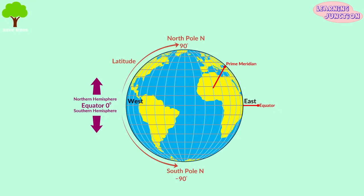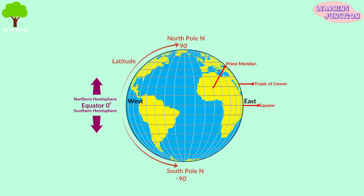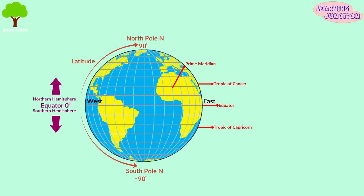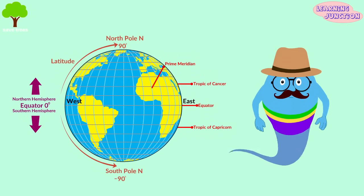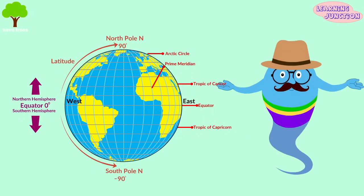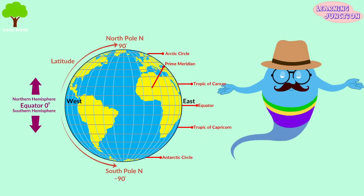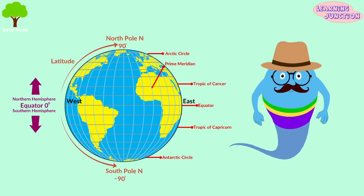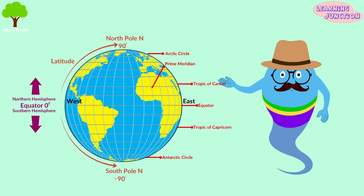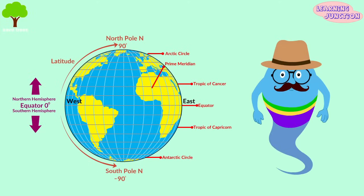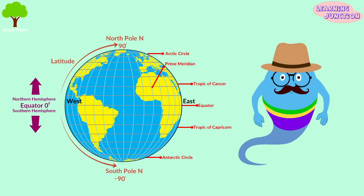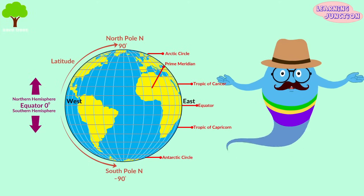The other important latitudes are the Tropic of Cancer in the north and the Tropic of Capricorn in the south. Apart from these, the Arctic and Antarctic circles at 66.5 degrees north and south respectively are equally important.